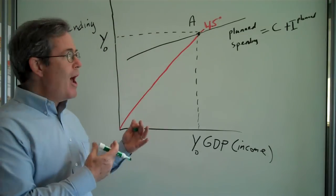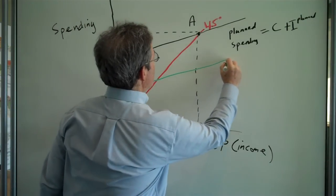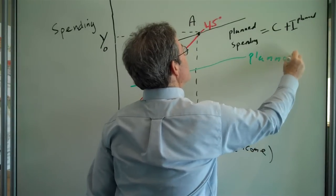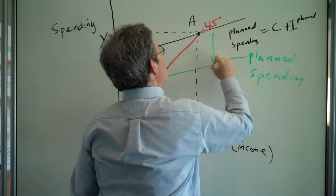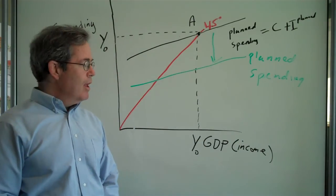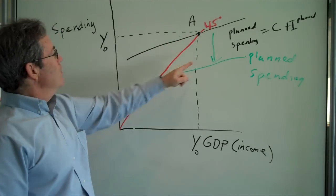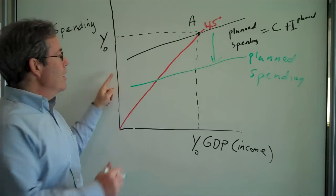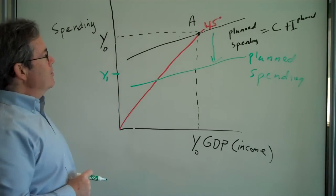How do we represent that on this graph? Well, what we show is that there is a shift down in the planned spending curve. Now, spending goes down from A, or Y0, all the way over to here, Y1.